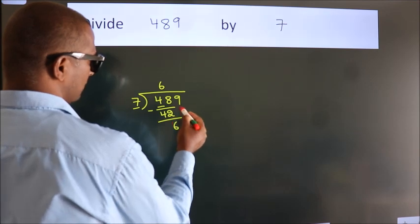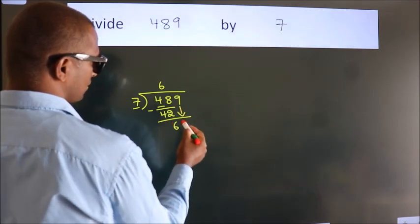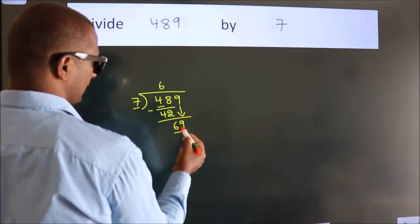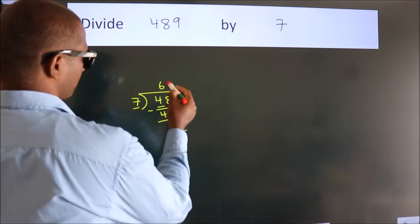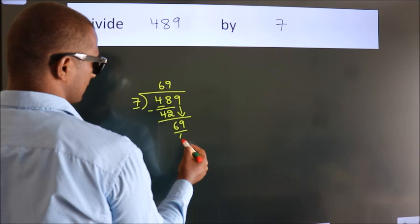After this, bring down the beside number, so 9 down. So 69. A number close to 69 in the 7 table is 7 times 9, which is 63.